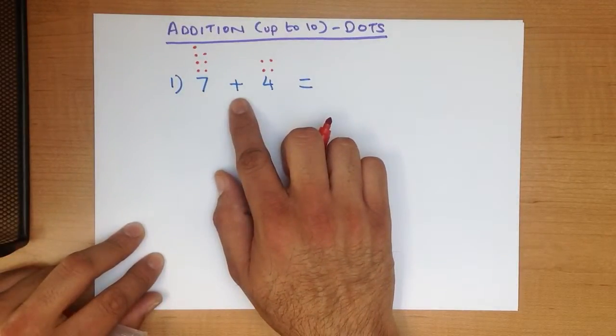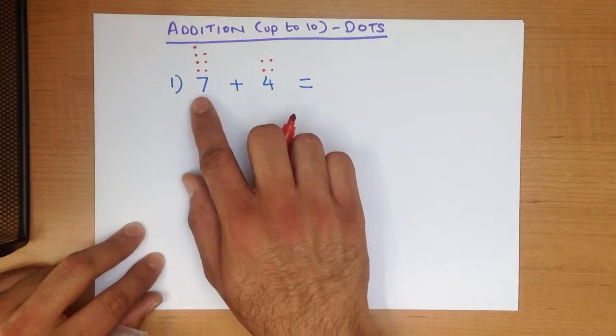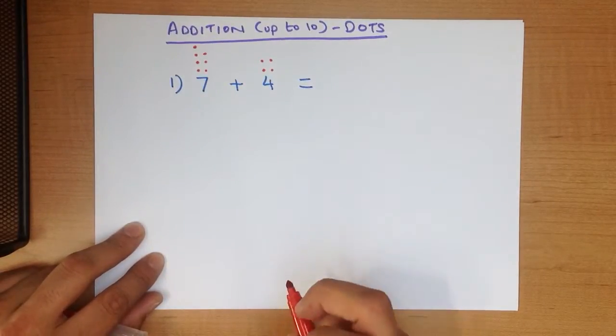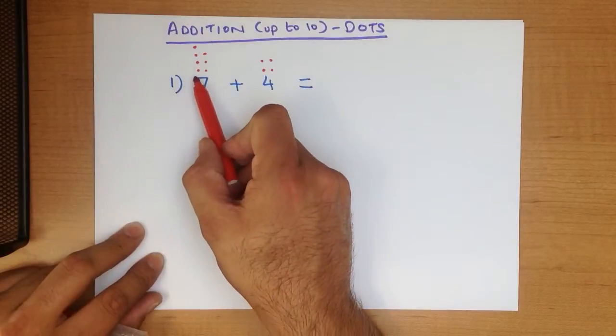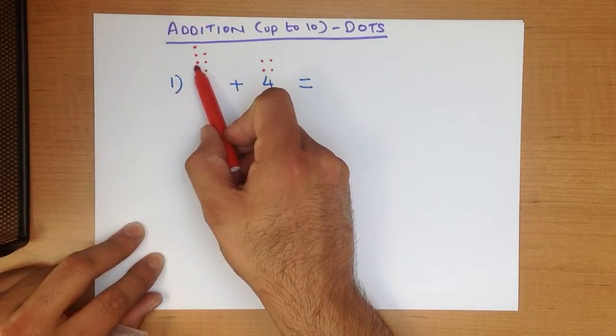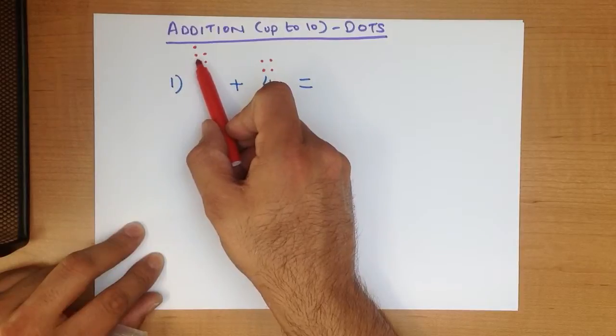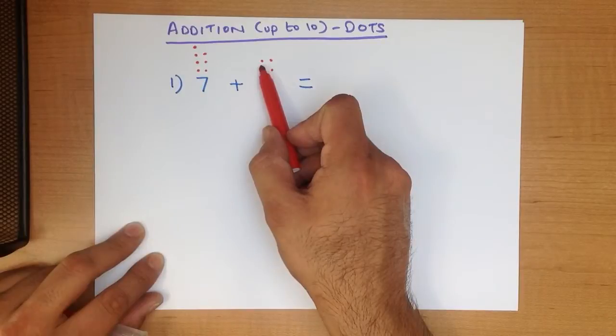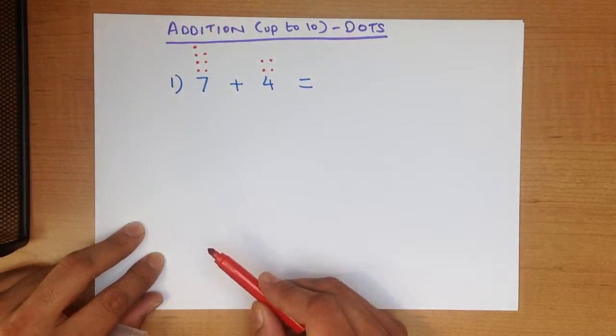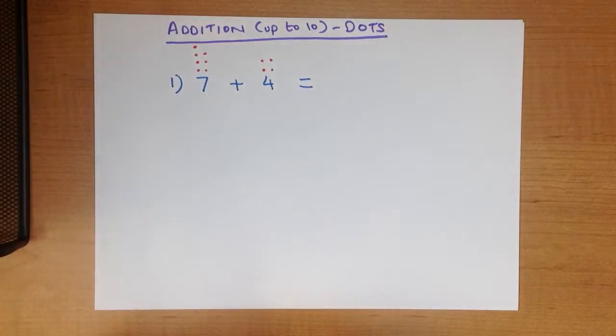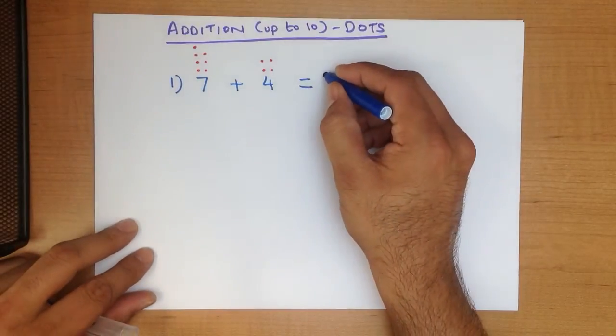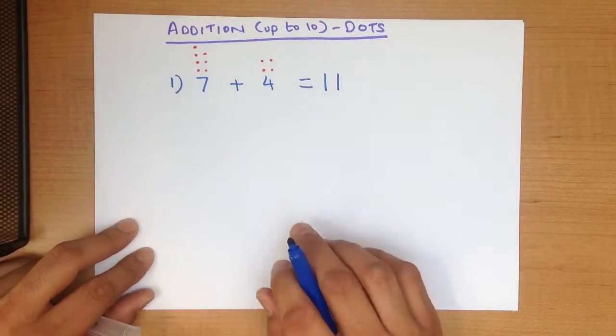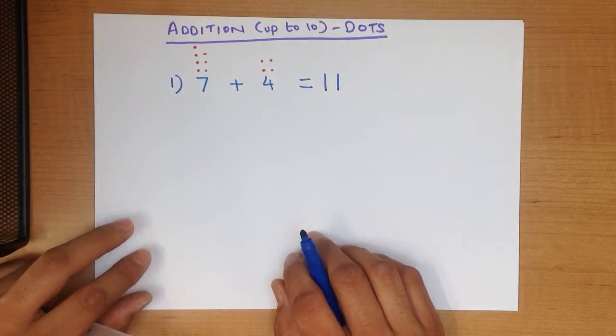And because we are adding the numbers, all we do is count how many dots there are in total. So let's do this: 1, 2, 3, 4, 5, 6, 7, 8, 9, 10, 11. And that is our answer, 11. Let's write that down. 7 plus 4 equals 11. Now that was nice and easy, wasn't it?